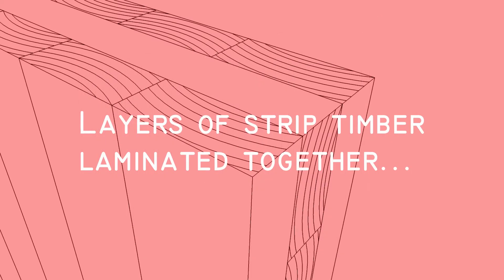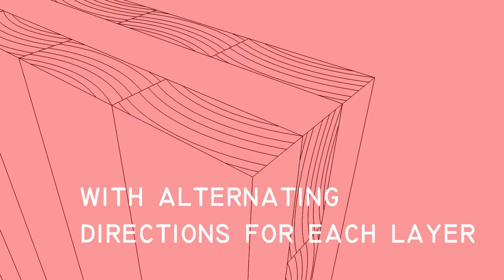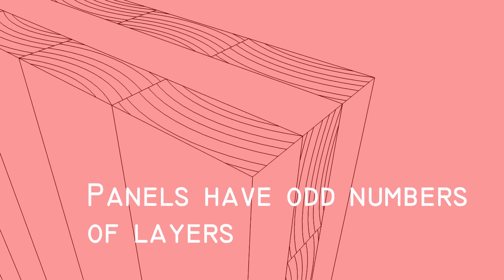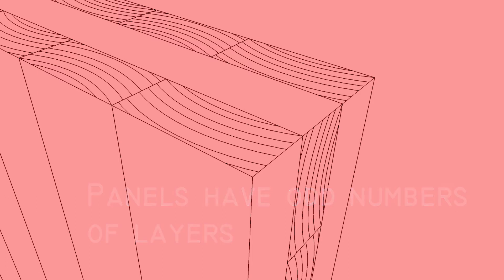CLT panels are made from layers of laminated timber. These layers alternate so that no two adjacent layers will have their grain running in the same direction. This provides strength and rigidity and reduces the possibility of warping. Panels are made from an odd number of layers, or lamellas, with typically three, five or seven layers making up each panel.